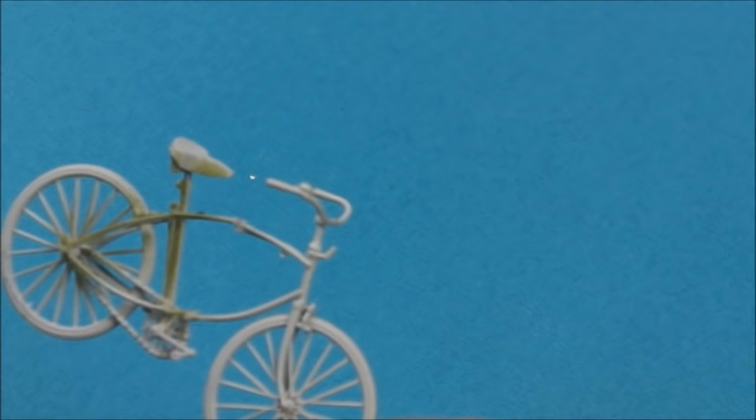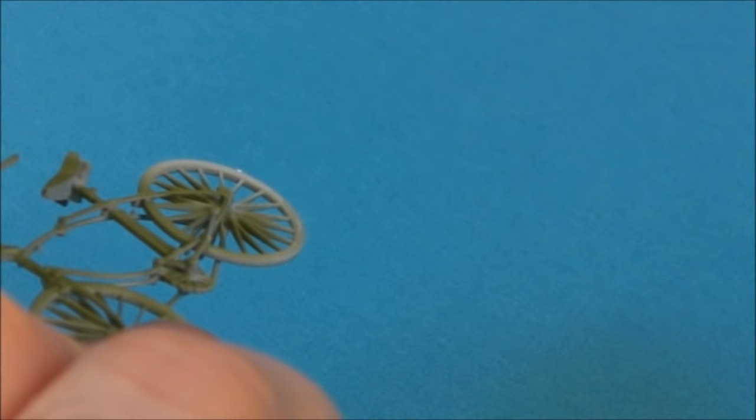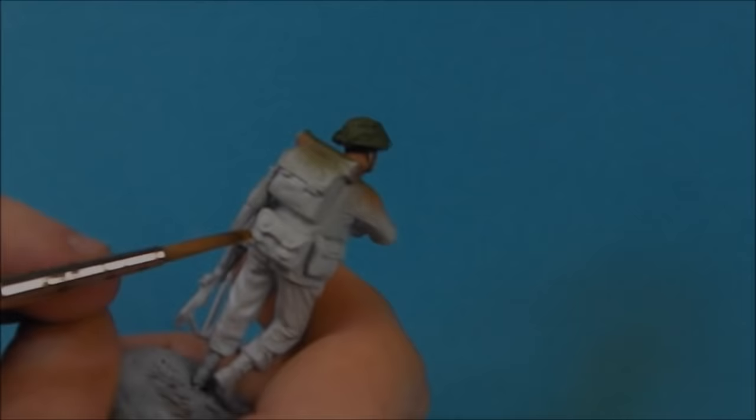Since we have this color, I'm also going to spray up his bicycle. Again, we're going to hit this with the Russian Uniform. We're not going to see this bike much in this video. I'm just going to paint most of this off-camera using flat black for the tires and saddle. We're going to be focusing mostly on the commando himself.